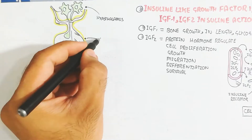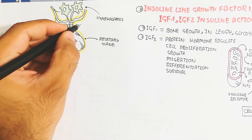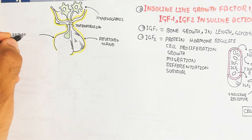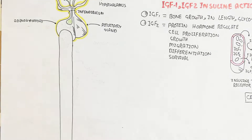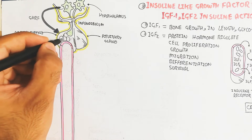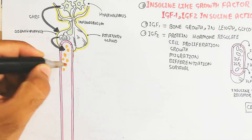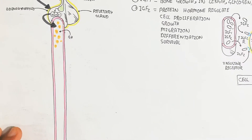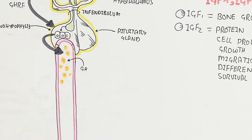The hypothalamus, located below the thalamus of the brain, connects via the infundibulum to the pituitary gland — the adenohypophysis and neurohypophysis. We focus on the adenohypophysis (anterior pituitary gland). The hypothalamus stimulates the adenohypophysis through growth hormone-releasing factor to produce growth hormone.